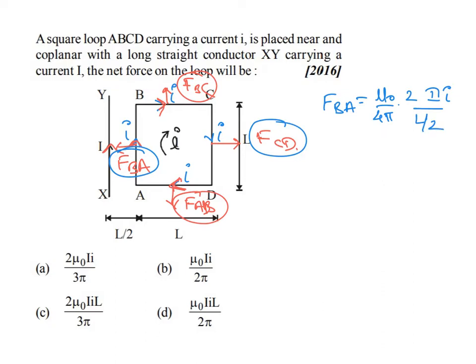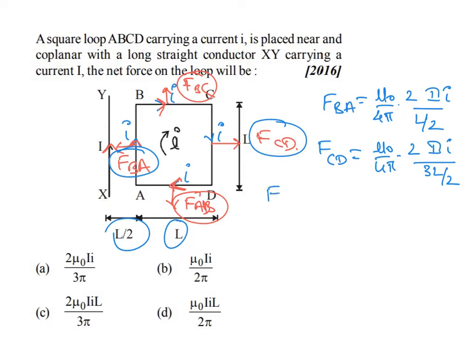F_BA = (μ₀/4π) × (2 × I × I) / (L/2), since the distance from the straight conductor to AB is L/2. F_CD = (μ₀/4π) × (2 × I × I) / (3L/2), since the distance from the conductor to CD is L/2 + L = 3L/2.